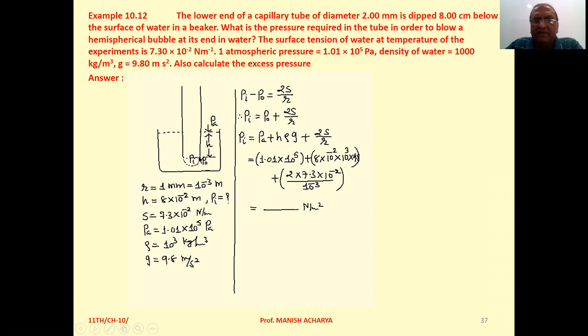H is the distance from the point where the bubble is formed to the surface of the liquid. Height H is given as 8 centimeter, that is 8 × 10⁻² meter.